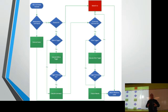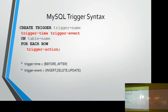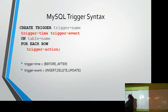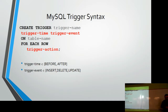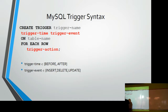The trigger syntax is: CREATE TRIGGER, give it a name, then trigger time, trigger event, ON some table, FOR EACH ROW, then the trigger action — which is your code. Trigger time is either BEFORE or AFTER. The trigger event is INSERT, DELETE, or UPDATE.